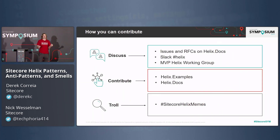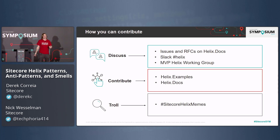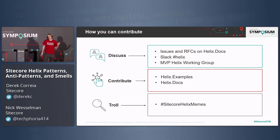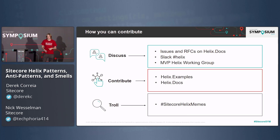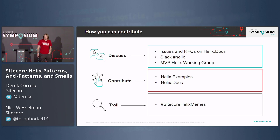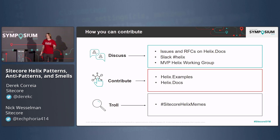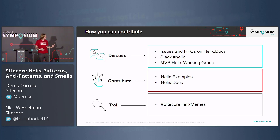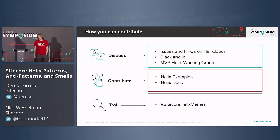We're going to continue the RFC process where you can comment based on your experience on proposed changes and additions to Helix. We now have what was the Helix Habitat channel on Slack, which we've renamed to just Helix. If you're an MVP, we're opening up the Helix working group so you can provide more direct contribution as we prioritize changes. Whether you're an MVP or not, we accept pull requests on both Helix examples and Helix docs — get in there, even if you just want to fix spelling or punctuation. If you have larger contributions, grab an issue in the backlog and issue a pull request.